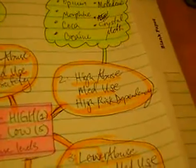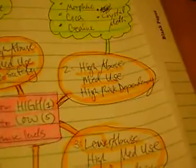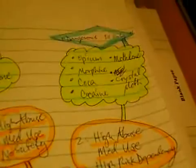Number two is high abuse. There is, however, medical use, and the reason why they're level two is there's a high risk for dependency. These would be like opium - you can actually use it for certain things, but it's very addictive.